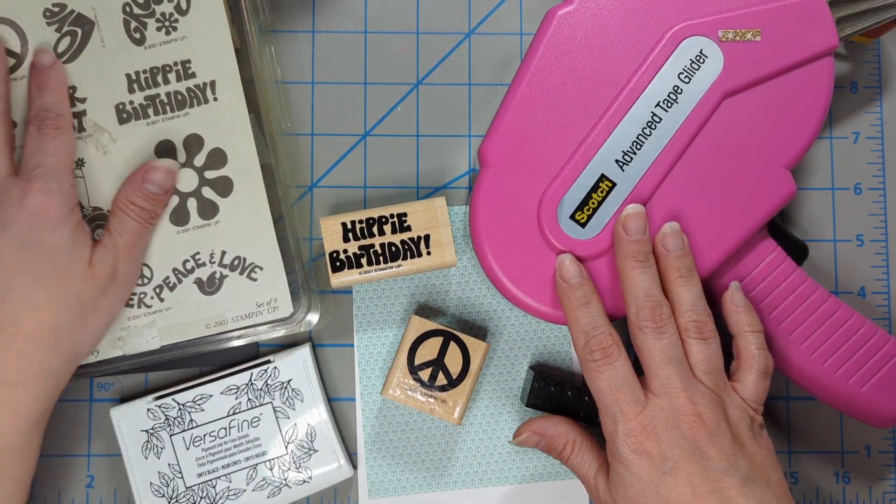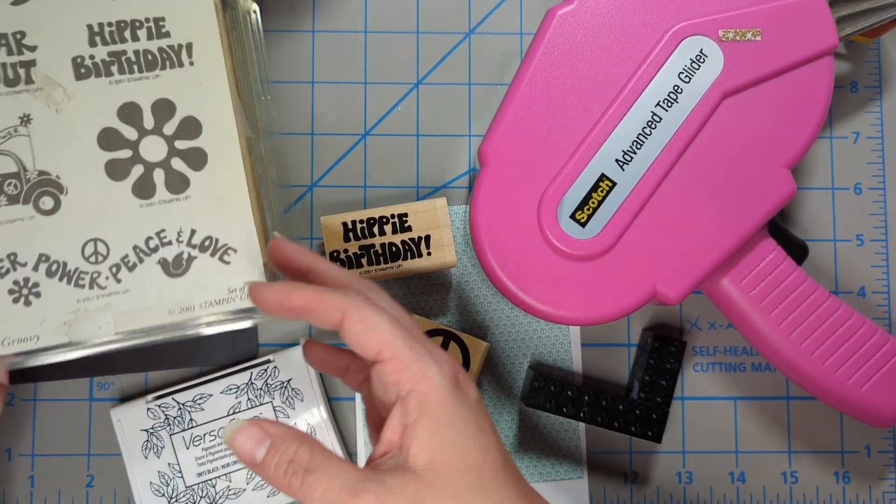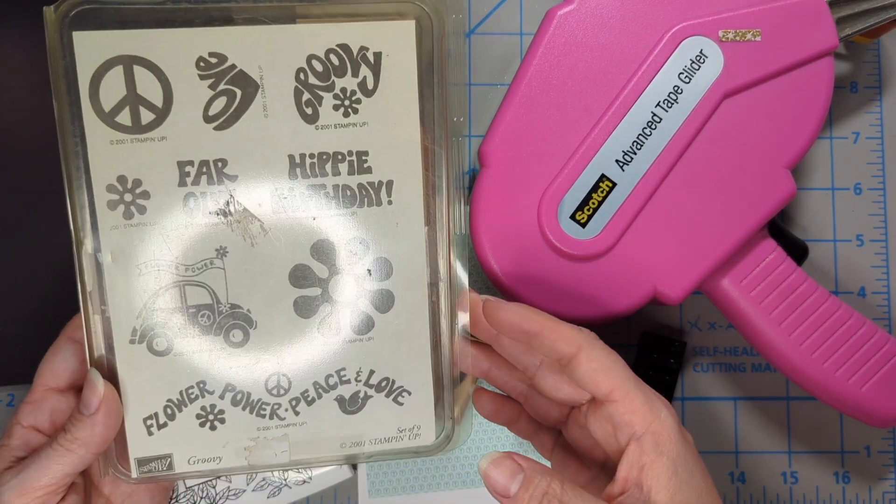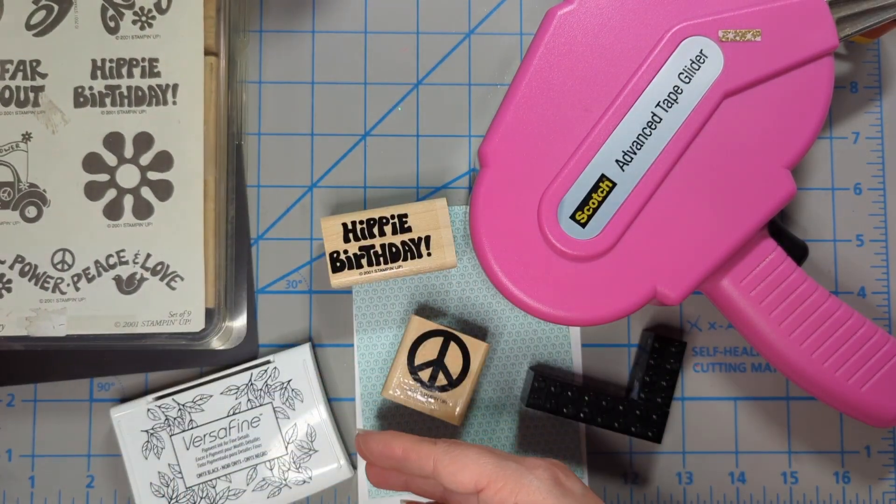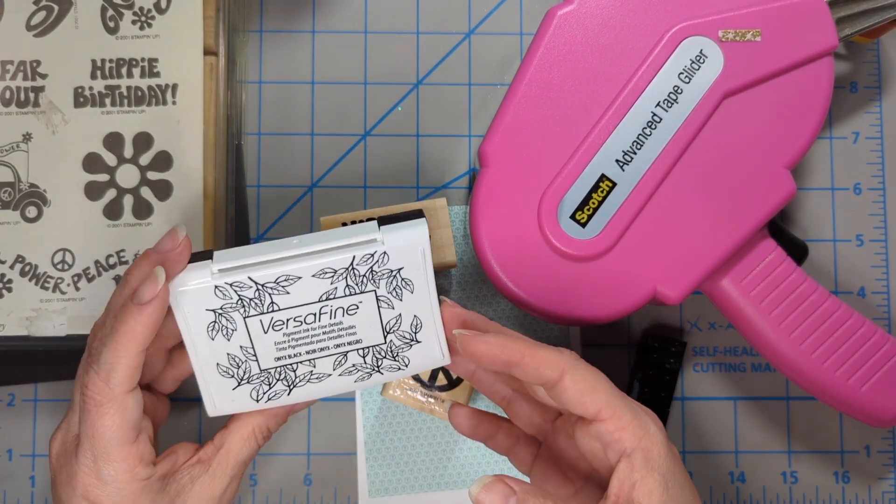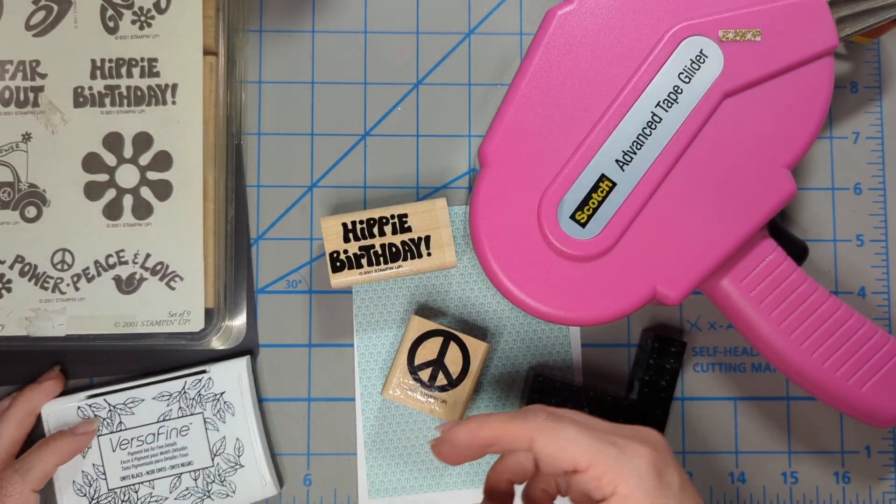Hi friends, Dre here. In today's card I'm going to be using this cute stamp set from Stampin' Up from 2001. I picked it up at Scrap Reuse Store a while ago and then I'm going to be using my VersaFine ink today.